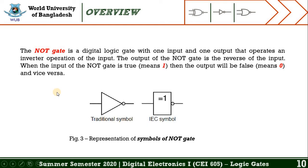Now we come to the last familiar gate, which is known as the NOT gate, also known as the inverter gate. The NOT gate is a digital logic gate with one input and one output that performs an inverter operation on the input. The output of the NOT gate is the reverse of the input. When the input is true — which means one — then the output will be false, which means zero, and vice versa. Figure 3 represents the symbol of the NOT gate, and this gate also has two symbols: one traditional and one IEC symbol.